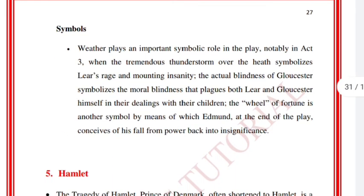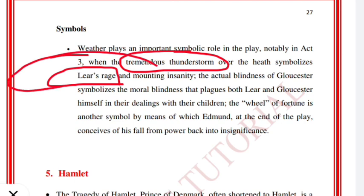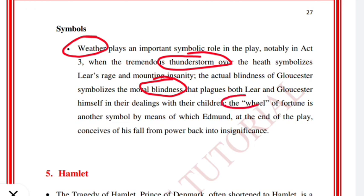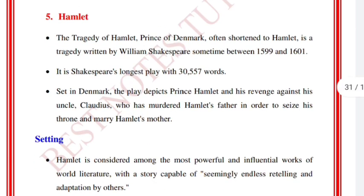The setting is 8th century BC at various locations in England. Themes include justice, authority versus chaos, reconciliation, and redemption. Symbols: weather plays an important symbolic role, notably in Act 3 where the tremendous thunderstorm symbolizes Lear's rage. The actual blindness of Gloucester represents the moral blindness that plagues both Lear and Gloucester in their dealings with their children. The wheel of fortune is another symbol, by means of which Edmund at the end of the play conceives of his fall from power. In the next video we will look at Hamlet and five other works. Goodbye.